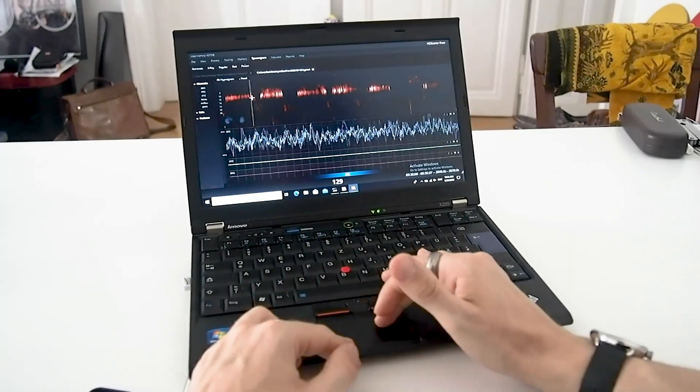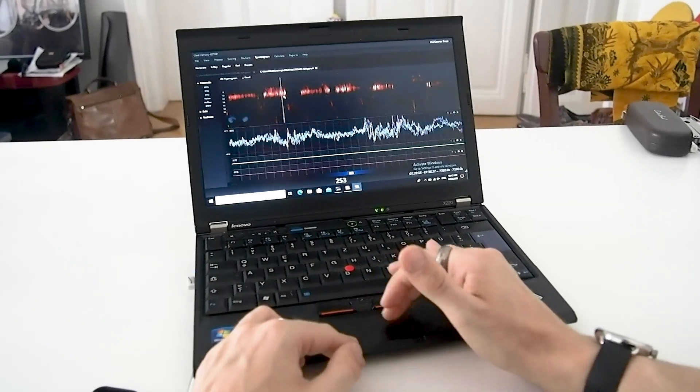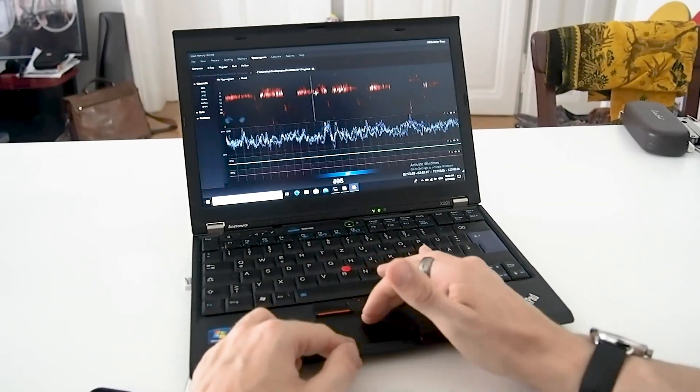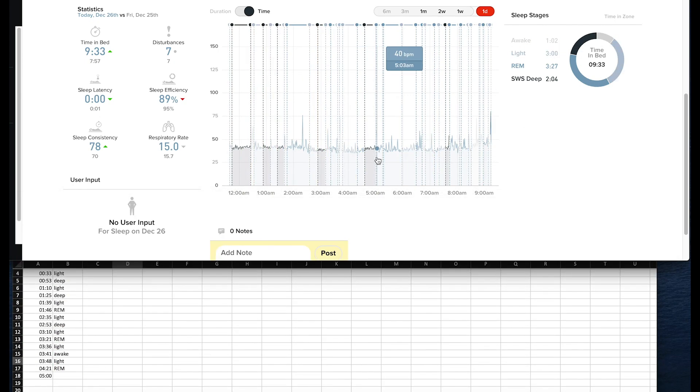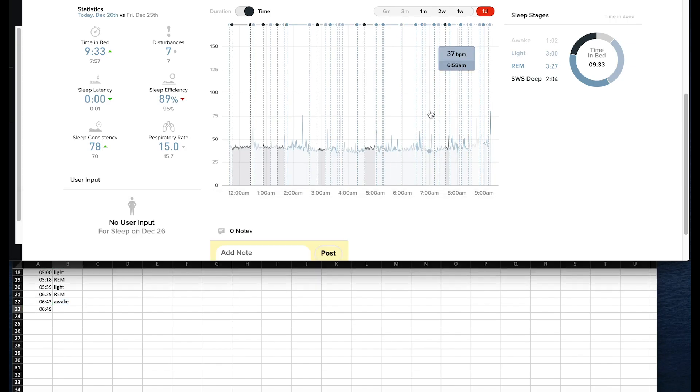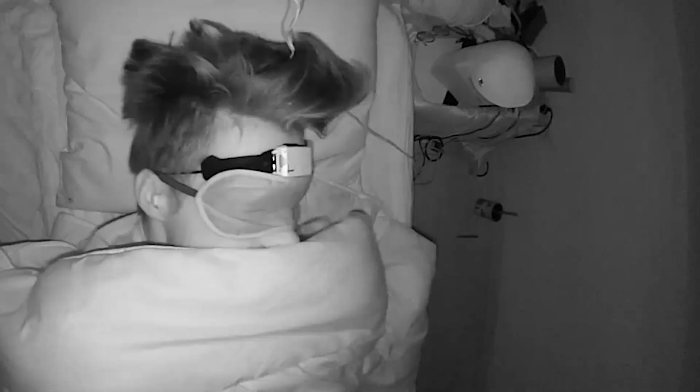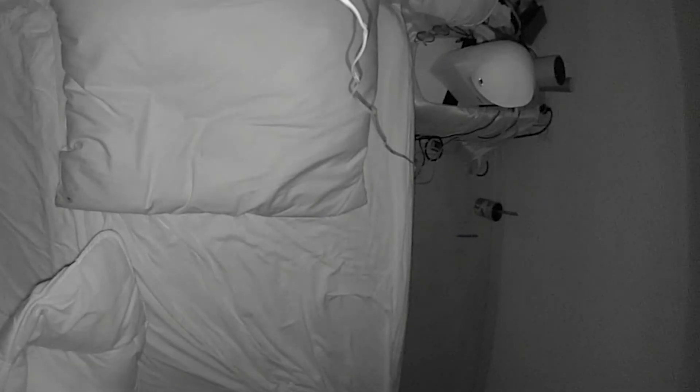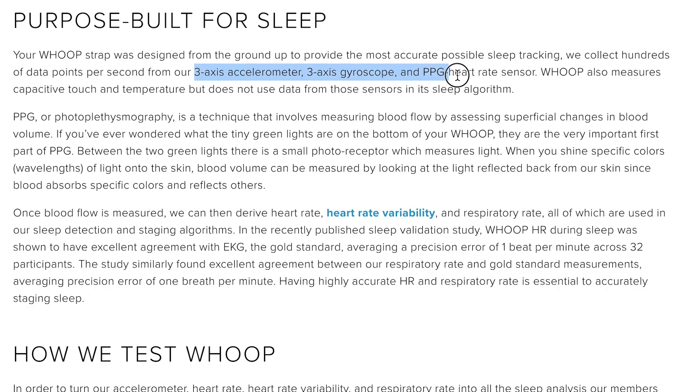I manually went through the recording of the EEG and scored each part of the night for the different sleep stages. I also manually went through the WHOOP strap sleep stages and noted those down in a table so I could analyze them. With the infrared recording I can actually check what my movements were like and check if the WHOOP strap correctly predicts those moments that I'm awake. For sleep staging the WHOOP algorithm uses the accelerometer, the gyroscope and the PPG sensor.